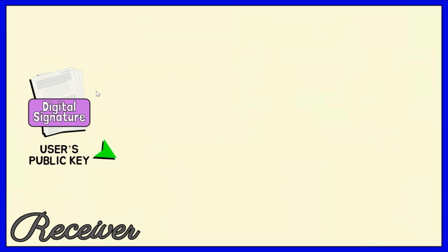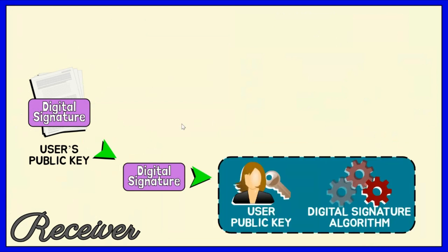The created digital signature is appended to the message. The user then sends the data with a digital signature along with the signer's digital certificate, which contains the public key, to the intended receiver. The public key is important because it makes the verification process possible. After receiving the data and signature, the receiver feeds the sender's public key and the digital signature into an algorithm.